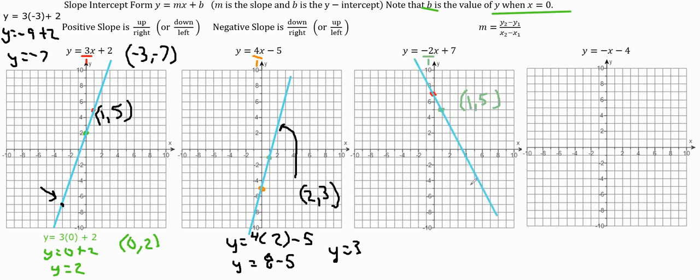To do the algebra one more time, let's figure out what this would be if x was 4. If we put 4 in for x, we would have y equals negative 2 times 4 plus 7. Negative 2 times 4 is negative 8, and negative 8 plus 7 is negative 1. That gives us the point 4, negative 1, which does cross the line.